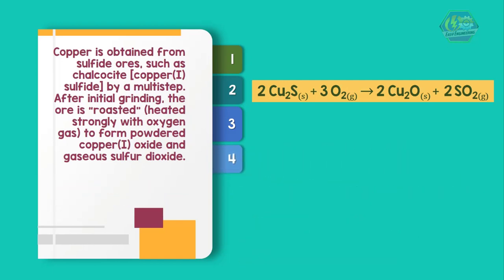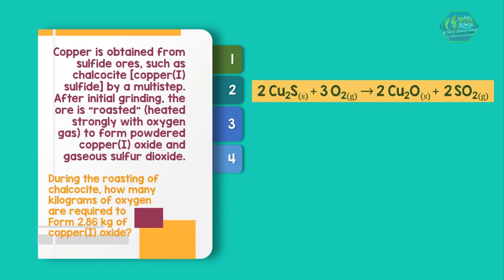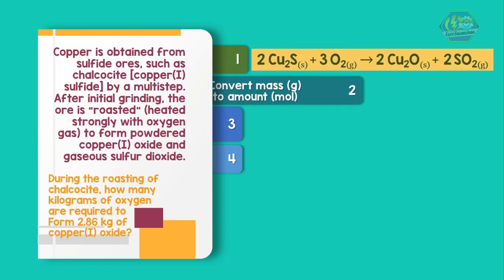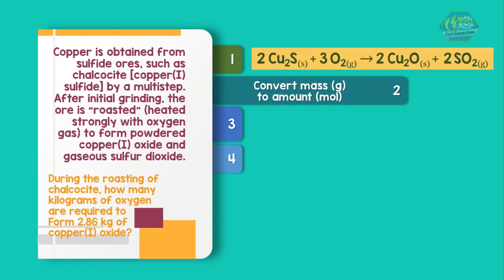Again, for another additional question: during the roasting of chalcocite, how many kilograms of oxygen are required to form 2.86 kilograms of copper oxide? First, write the balance equation. Second step, convert the known mass of a substance to amount in moles.